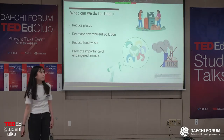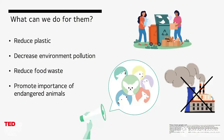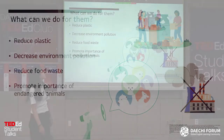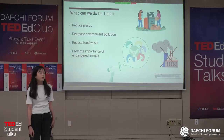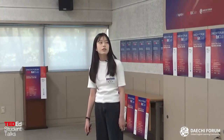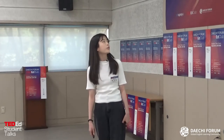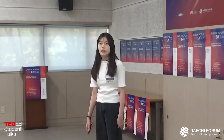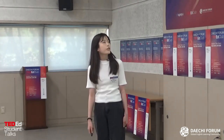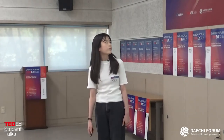Then what can we do to stop the increase of endangered animals and to save them? First, we need to decrease environmental pollution because it costs a lot for animals, nature, and people. Also, we can reduce and reuse plastic products and electricity because it can save a lot of things. We need to reduce plastic products and electricity as little as possible and not waste food.